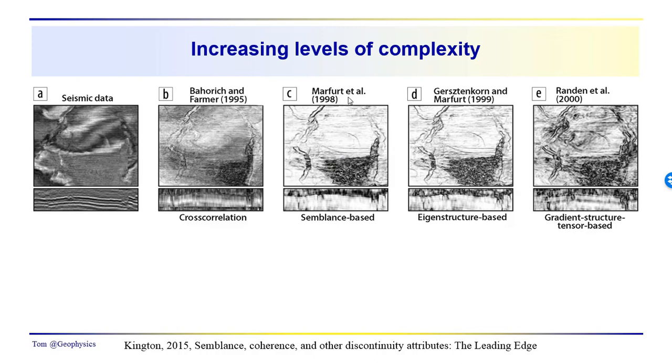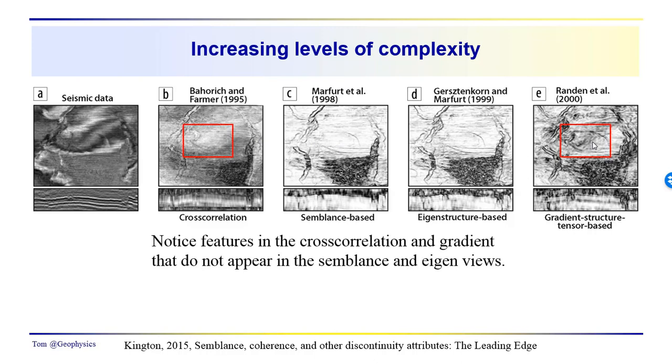Now, in subsequent years, we've had some work by Marford and Gertzden-Korn and Marford and Randon. And you'll notice that over here in the gradient structured tensor-based approach that we see features, as we do over here in the cross-correlation approach, that we don't really, we see some evidence for it over here, but we don't see this channel as well coming out into this interdistributary bay marsh area.